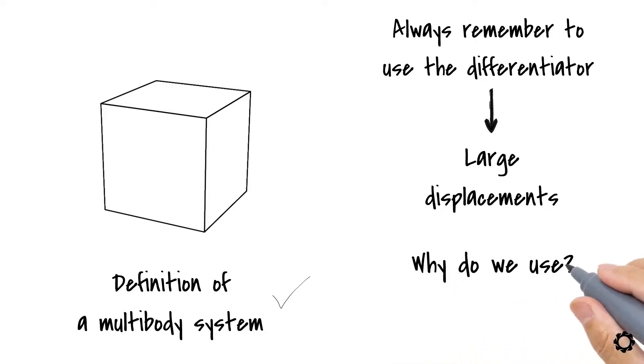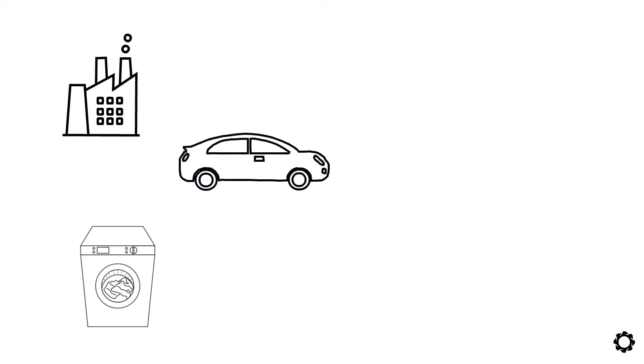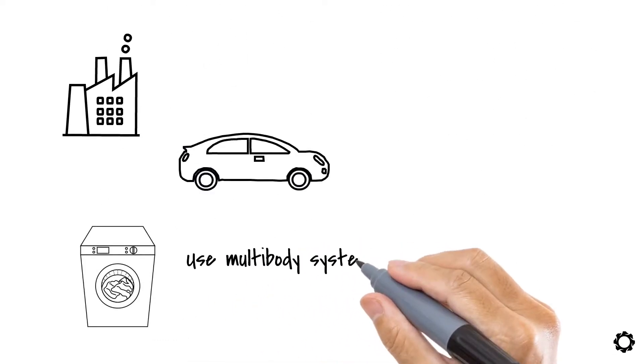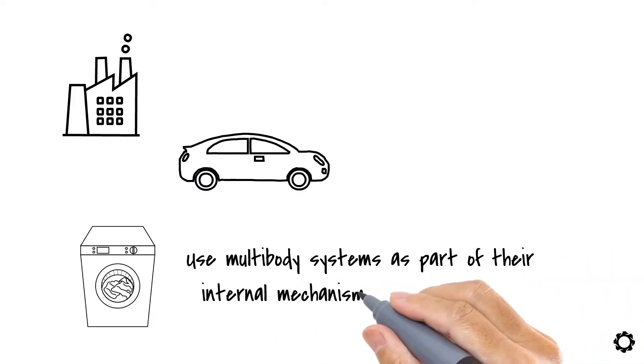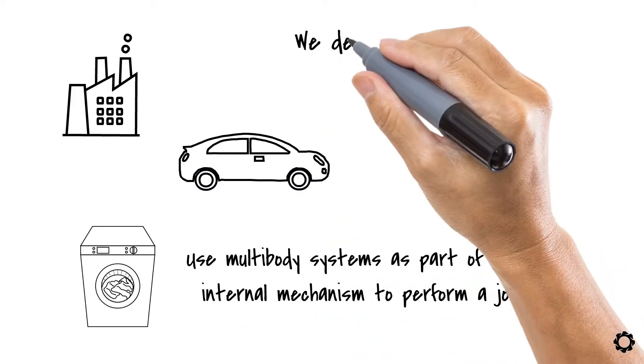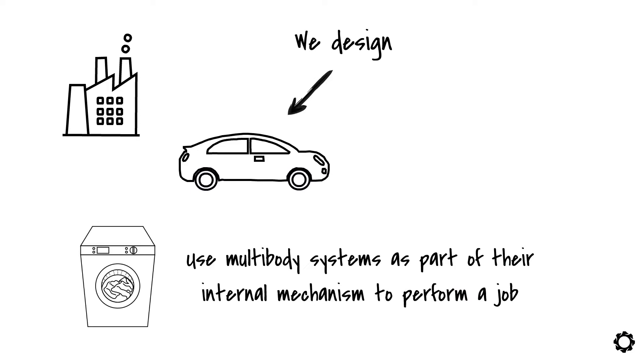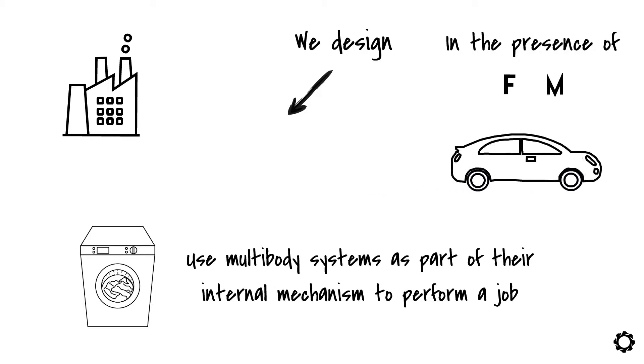Why do we use multibody systems? Why are they important in our life? Well, industries, vehicles and even a simple washing machine use multibody systems as part of their internal mechanism to perform a job. We design this collection of interconnected bodies in a way that when in the presence of determined forces and moments, they move in a certain way to accomplish a function.